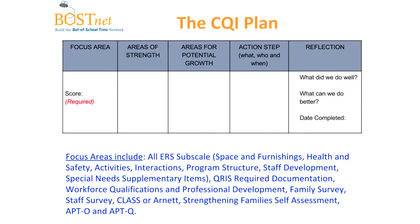Not that it's simple to fill out by any means. The CQI Plan is broken down into different focus areas listed on the document. It will include all the ERS subscales, which will look different depending on the ERS you filled out — SACKERS, ECKERS, or FECKERS. For SACKERS for school age, it will be space and furnishings, health and safety, activities, interactions, program structure, staff development, and special needs supplementary items. After the ERS, you have QRIS required documentation, workforce qualifications, and professional development, family survey and staff survey, the CLASS or ARNET depending on your age group, strengthening families, and for school age, the APT-O and APT-Q.